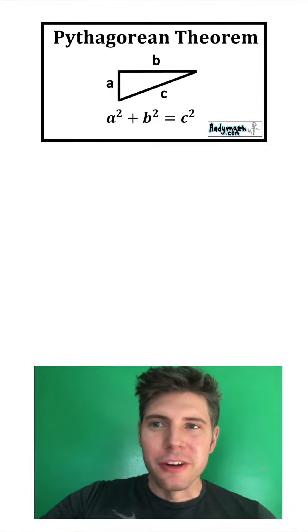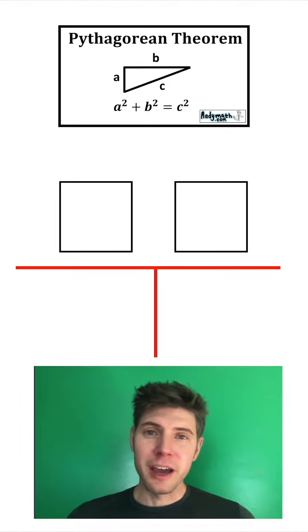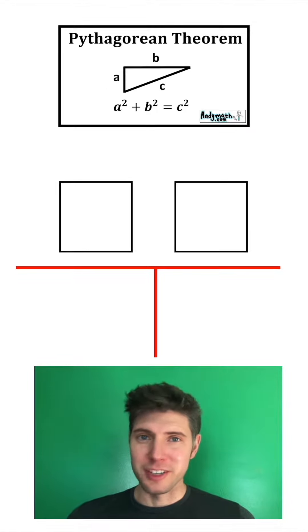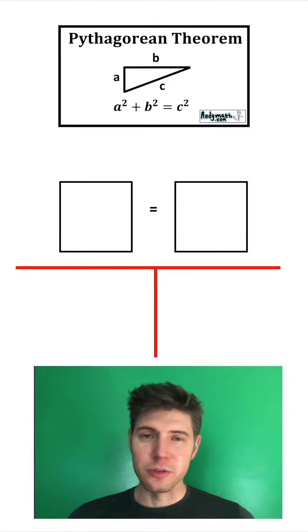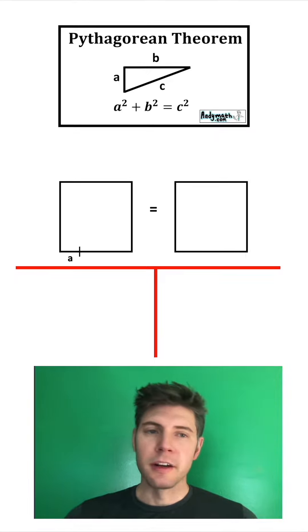This person requested the Pythagorean theorem. We start with a square, then we have another square that's the exact same size. So these two squares are equal to each other.